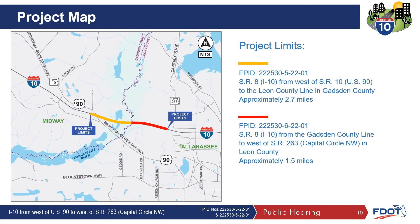The study limits for FPID 222-530-5-22-01 extend from west of SR-10 U.S. 90 to the Leon County line in Gadsden County, approximately 2.7 miles. The study limits for FPID 222-530-6-22-01 extend from the Gadsden County line to west of SR-263, Capital Circle NW, in Leon County, approximately 1.5 miles.